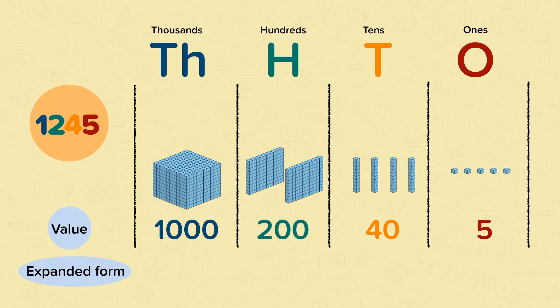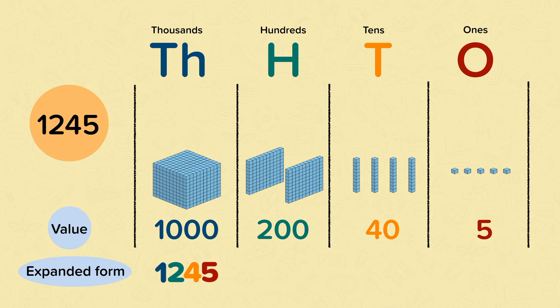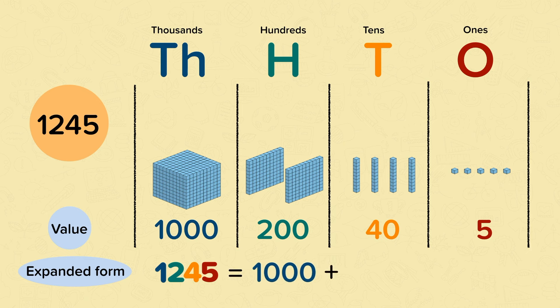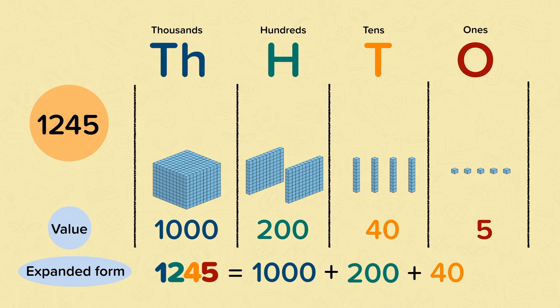The expanded form is used to show the value of each digit in a number. So one thousand two hundred and forty-five written in the expanded form would look like this: one thousand, add two hundred, add forty, add five.